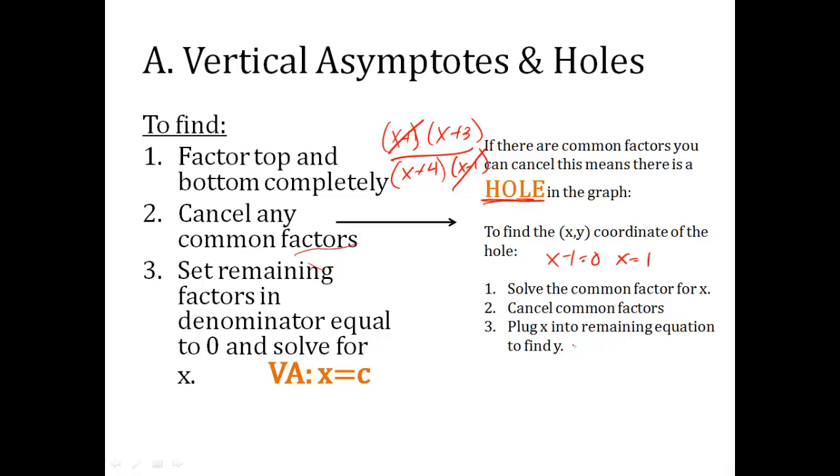Cancel the common factors, and then I plug that x into the remaining equation. So what's left when I cancel it is x plus three over x plus four. So I put this x that I solved for in there. So one plus three over one plus four is four-fifths. So that means the hole exists where x is one and y is four-fifths. That's where the hole of the graph will be when I graph it.